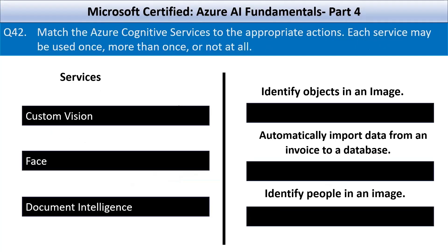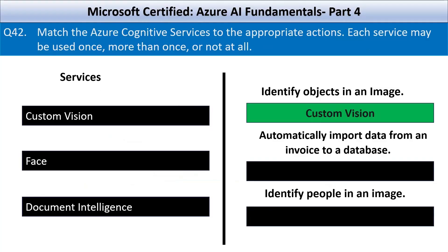Next question: match the Azure Cognitive Services to the appropriate actions. Each service may be used once, more than once, or not at all. The three services are Custom Vision, Face, and Document Intelligence. The first action is: identify objects in an image. Custom Vision is used to identify specific objects in an image — you can train it to recognize custom categories of objects based on your needs.